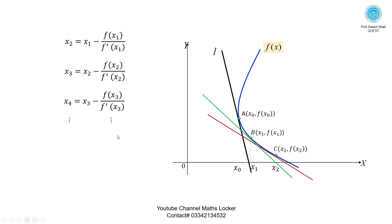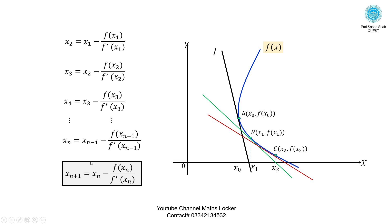Continuing this process, the general iterative formula is: xₙ = xₙ₋₁ - f(xₙ₋₁) / f'(xₙ₋₁). This is called the Newton-Raphson formula, which is used to calculate real roots of the equation f(x) = 0, where x is in the interval [a, b].